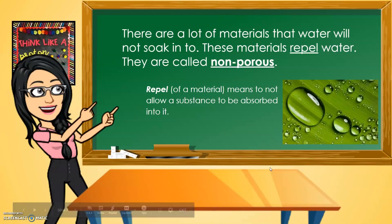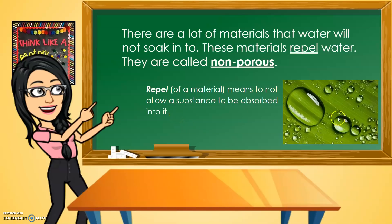There are also many materials that water will not soak into — these materials repel water and they are called non-porous. Repel means not to allow a substance to be absorbed into it. For example, a leaf — we often see this: when you pour water on a leaf, the water just slides off and is not absorbed by the leaf. It will not allow water to pass through — that is what repel means.